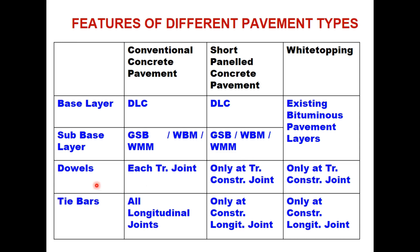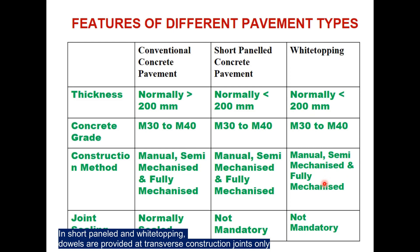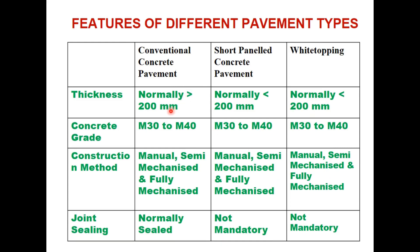Dowel bars are provided at each transverse joint in conventional concrete pavement, whereas only tie bars are used at transverse construction joints for short paneled and white topping. Thickness is normally more than 200 millimeter for conventional pavement and less than 200 millimeter for short paneled and white topping. Concrete grade and construction method are the same across all three types. Joint sealing is normally done in conventional pavement but is not mandatory for short paneled and white topping.